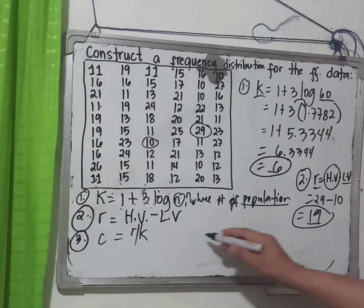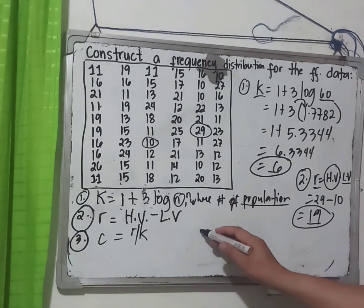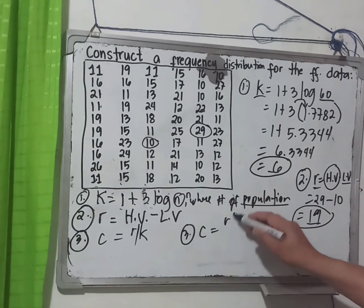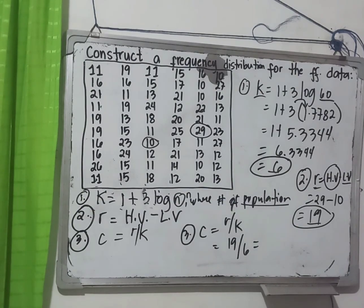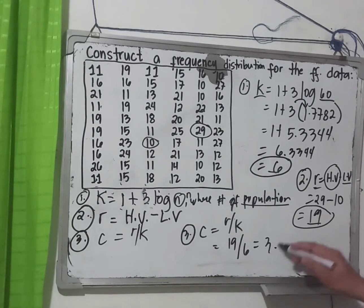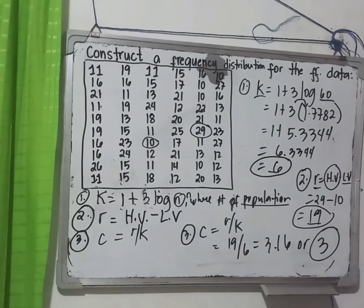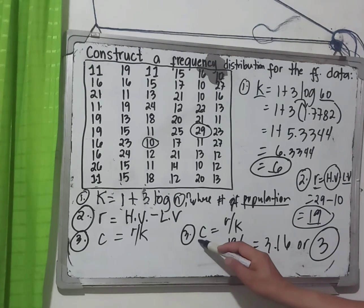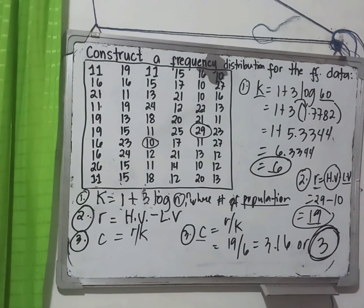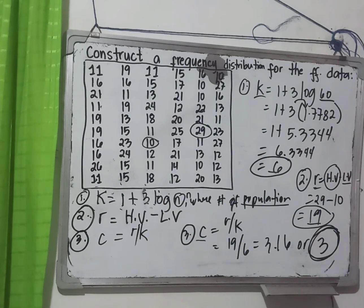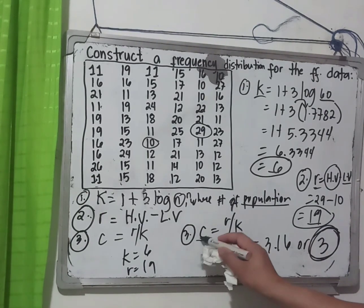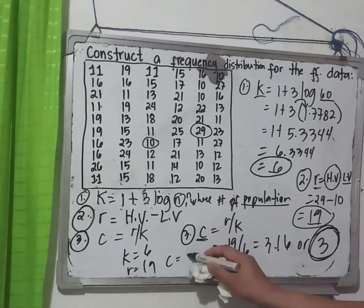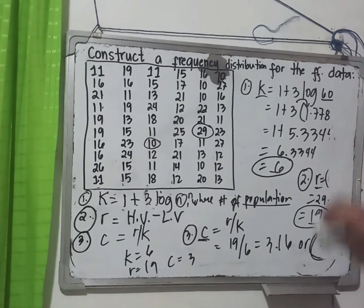Now we have: k equals 6 and r equals 19. For step number three, class size c equals r over k. That is 19 over 6, which equals 3.16, so the class size is 3.